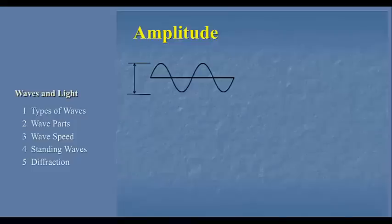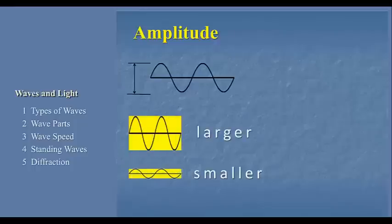The last wave characteristic we'll talk about is amplitude. For a transverse wave, this is simply the height of the wave. You can see that for these two waves, even though they have the same wavelength, one has a larger amplitude than the other.